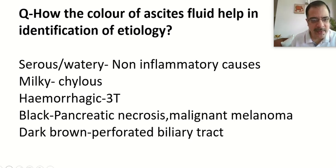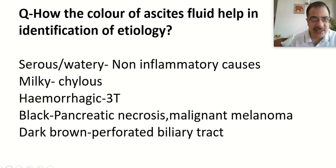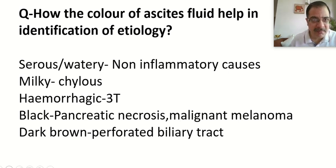Black ascites is due to pancreatic necrosis or malignant melanomas. Dark brown ascitic fluid is due to perforation of the biliary tract. Along with color, we calculate the SAAG and assess the total ascitic fluid protein to make an appropriate etiological diagnosis.